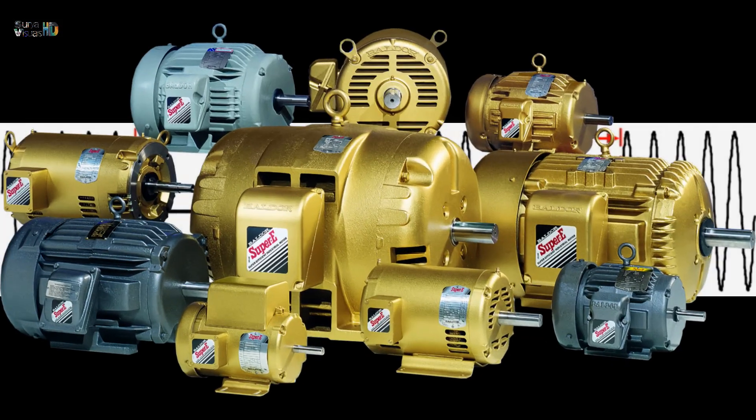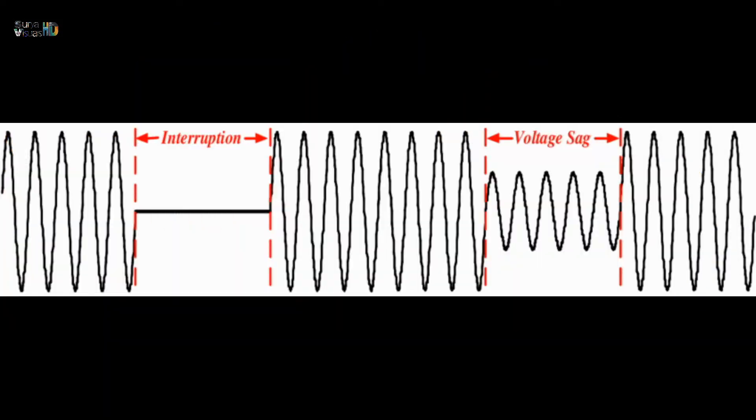Momentary interruptions, typically no more than 2 to 5 seconds, cause a complete loss of voltage and are a common result of the actions taken by utilities to clear transient faults on their systems. Sustained interruptions of longer than one minute are generally due to permanent faults.